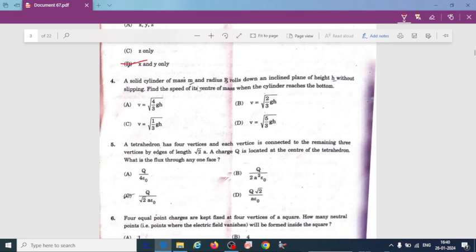Next one, a solid cylinder of mass M radius R rolling down on an inclined plane of height h without slipping. Find the speed of its center of mass when the cylinder reaches the bottom. So actually a solid cylinder is rolling down on an inclined plane. So here if we solve for this we will get here the speed velocity v is equal to under root 4 divided by 3 gh. So option A is correct.